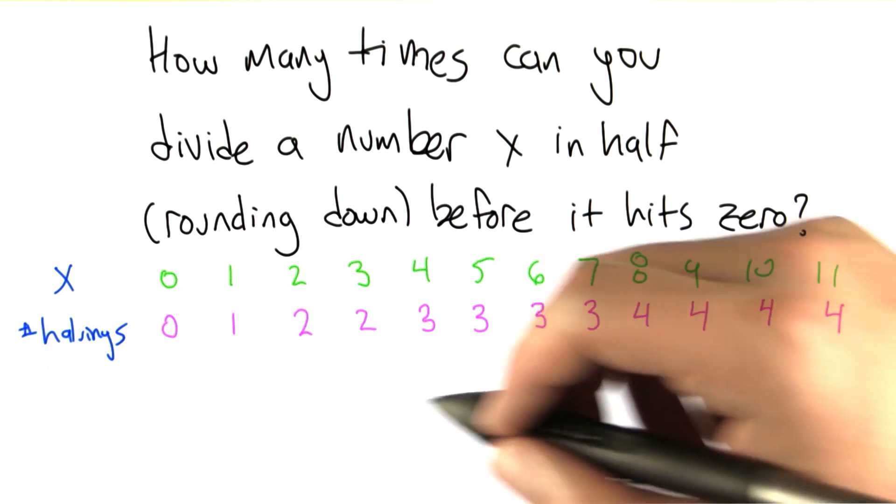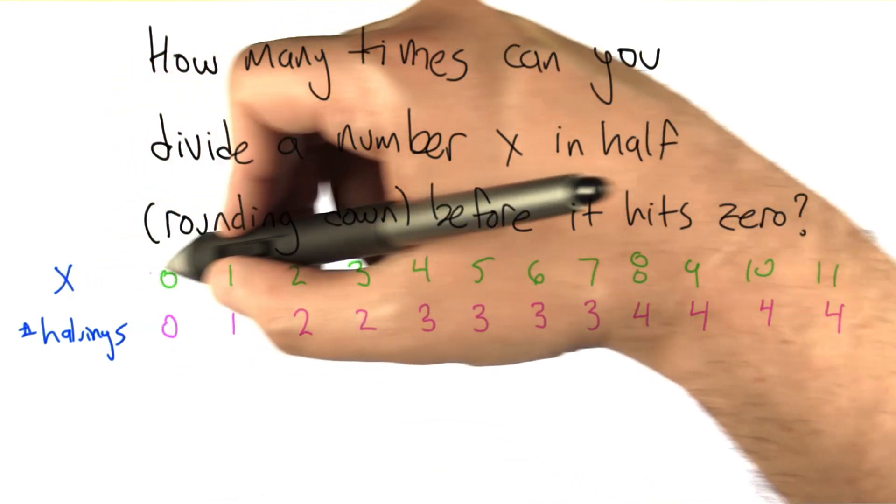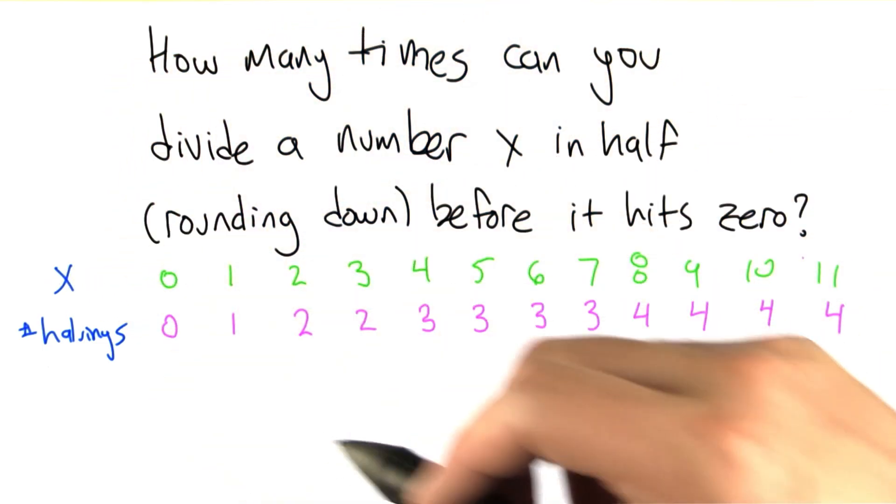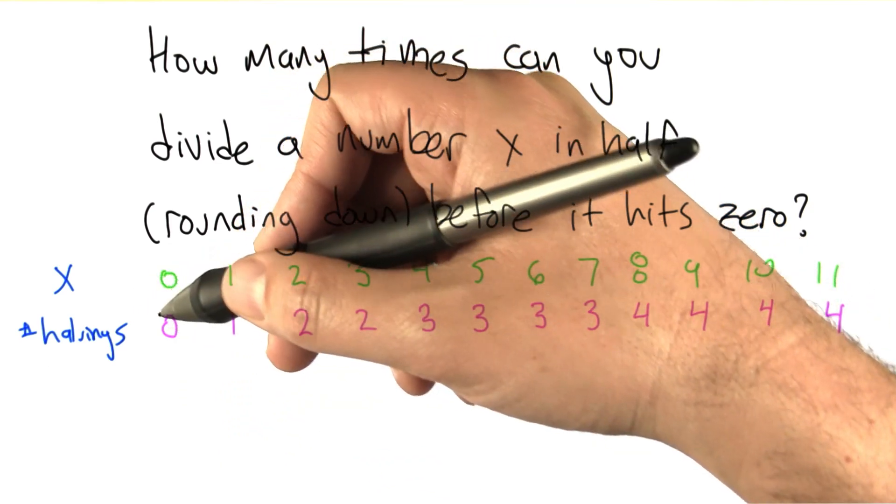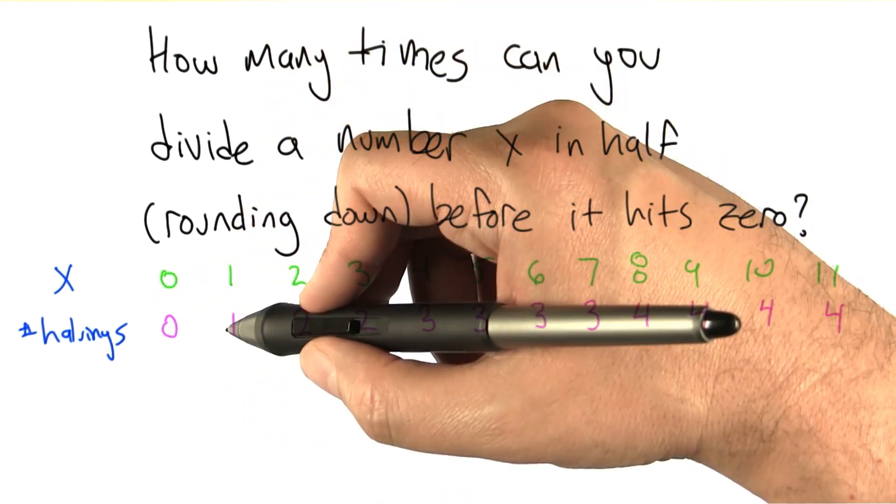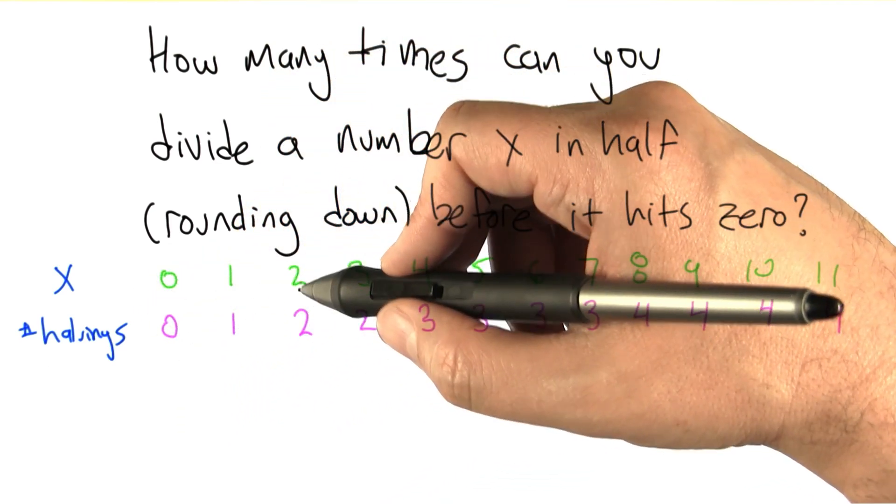Here's some examples. If x can be something between 0 and 11, here's how many halvings. If the number is 0, you don't have to halve it at all to get down to 0. If it's 1, you have to halve it once. If it's 2, you have to halve it twice.